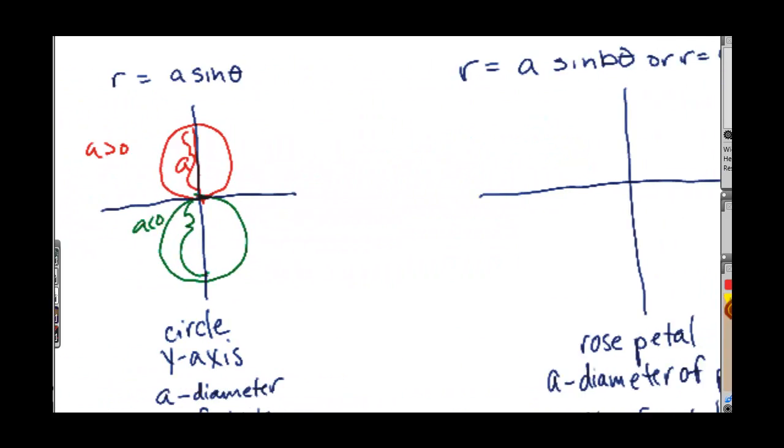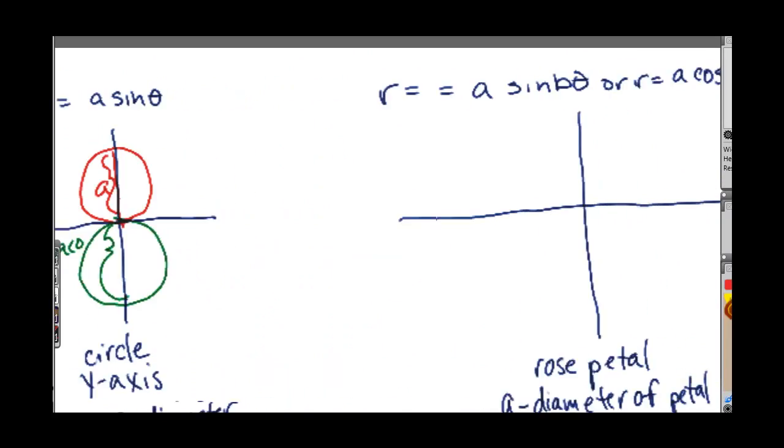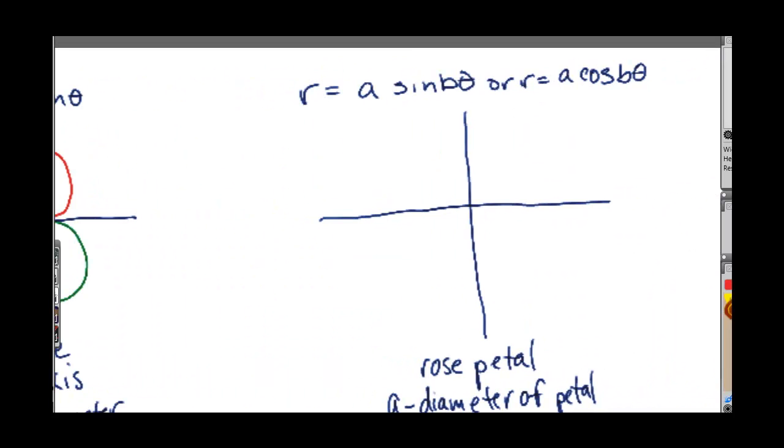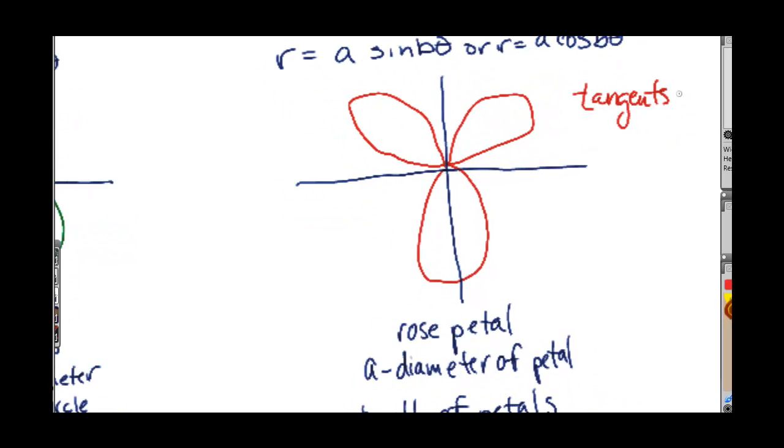Now if we have one of these two equations, it's a rose petal. And rose petals have this kind of shape. And what you'll do for these rose petals is you will find the tangents at the pole. Remember what we just discussed? The asymptotes of the polar coordinate system. And you do that by setting r equal to zero.